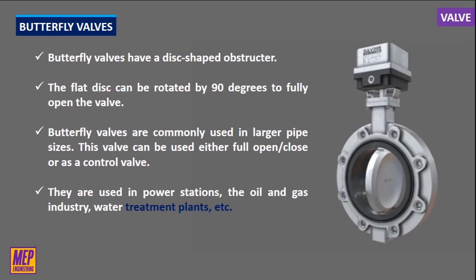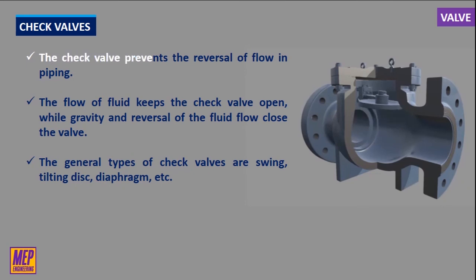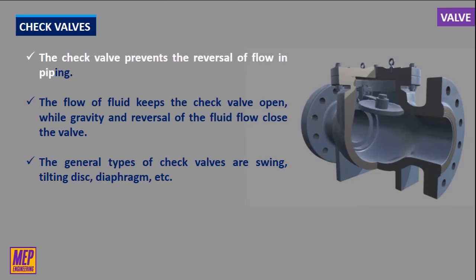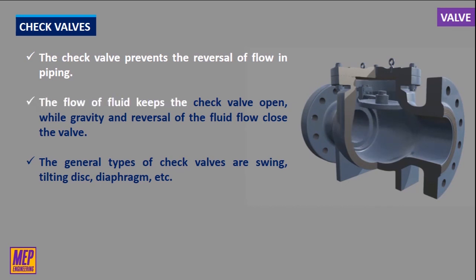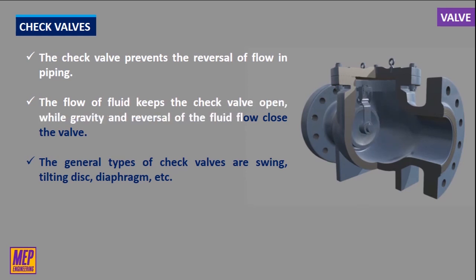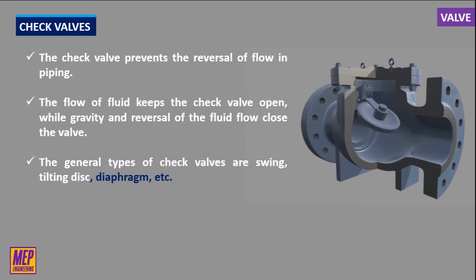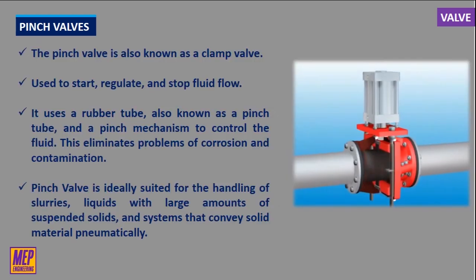Butterfly valves can be used either fully open, fully closed, or as a control valve. They are used in power stations, the oil and gas industry, water treatment plants, etc. Check valves prevent the reversal of flow in piping. These valves are activated by the flowing material in the pipeline. The flow of fluid keeps the check valve open, while gravity and reversal of fluid flow close the valve. General types of check valves include swing, tilting disk, and diaphragm types.